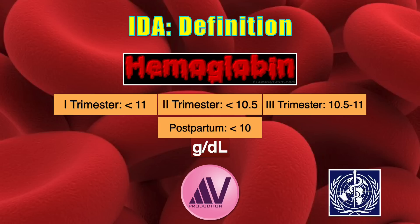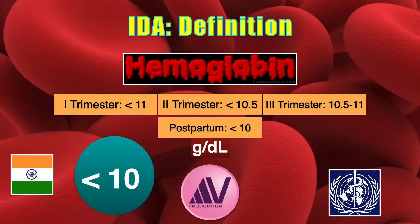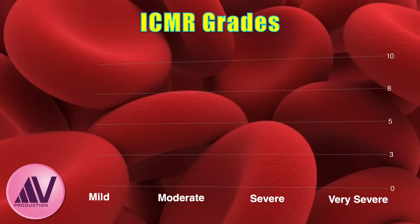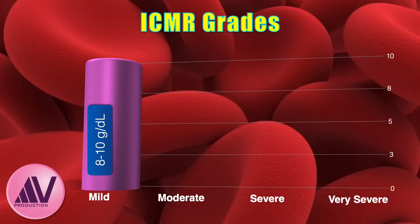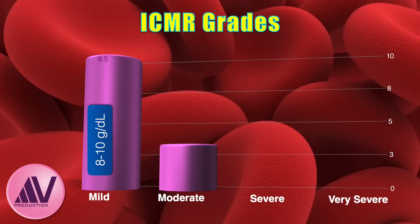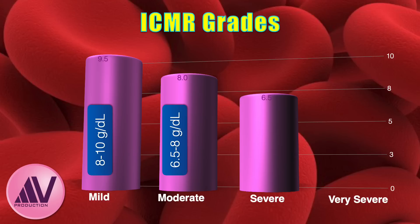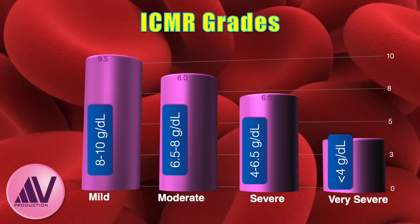If we were to apply this definition to Indian pregnant women, virtually every gravid woman would be labeled as anemic. Therefore, the definition used in India is hemoglobin less than 10 g/dL. The Indian Council of Medical Research has proposed the following grading system: mild anemia is 8–10 g/dL, moderate is 6.5–8 g/dL, severe is 4–6.5 g/dL, and very severe anemia is below 4 g/dL, which is not very rare in India.